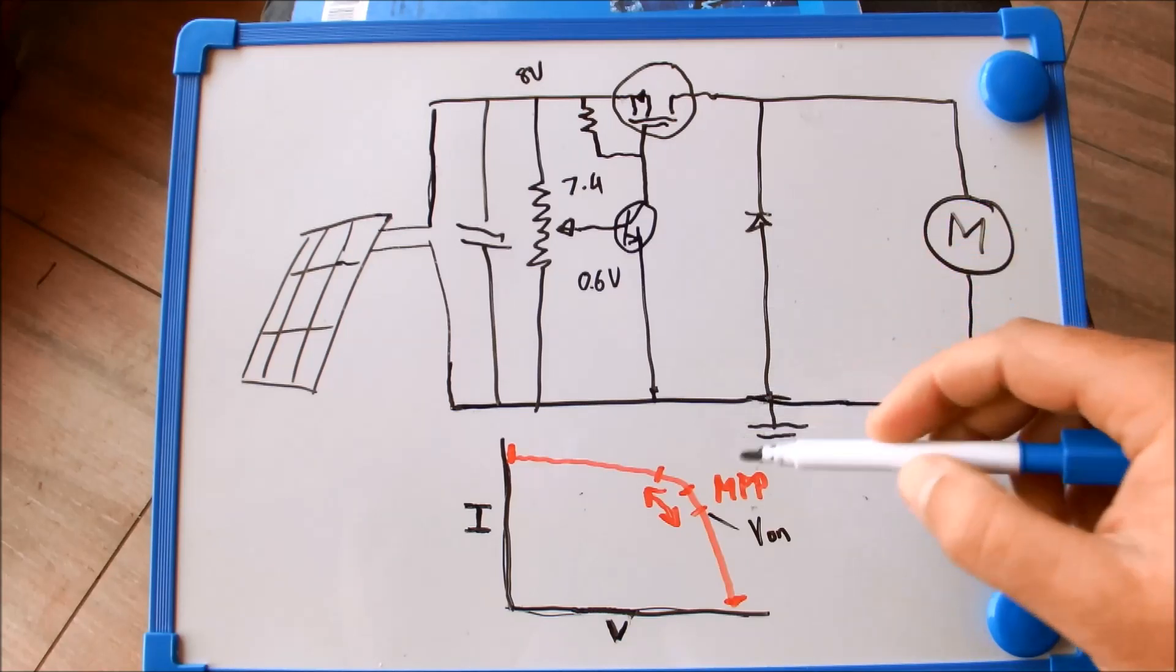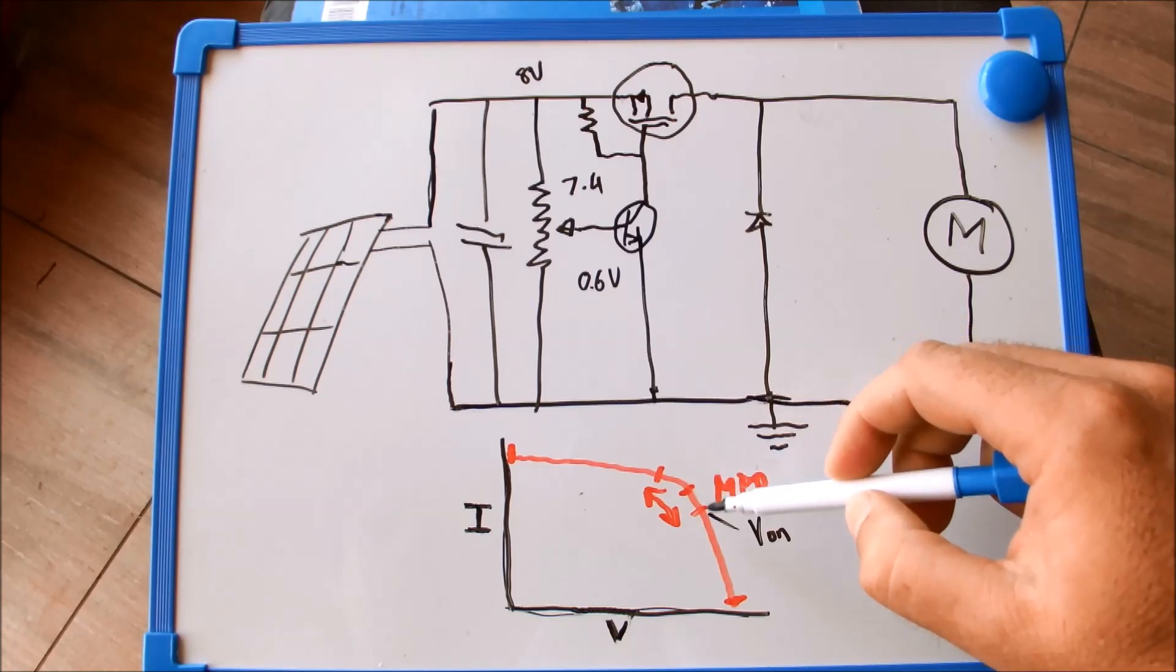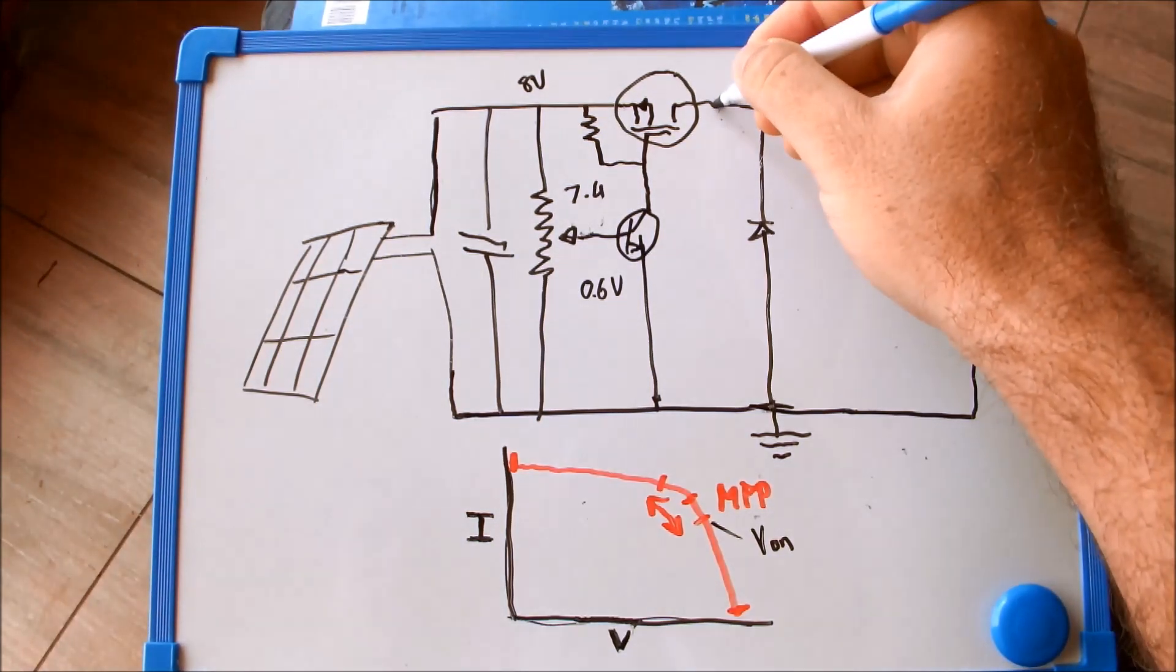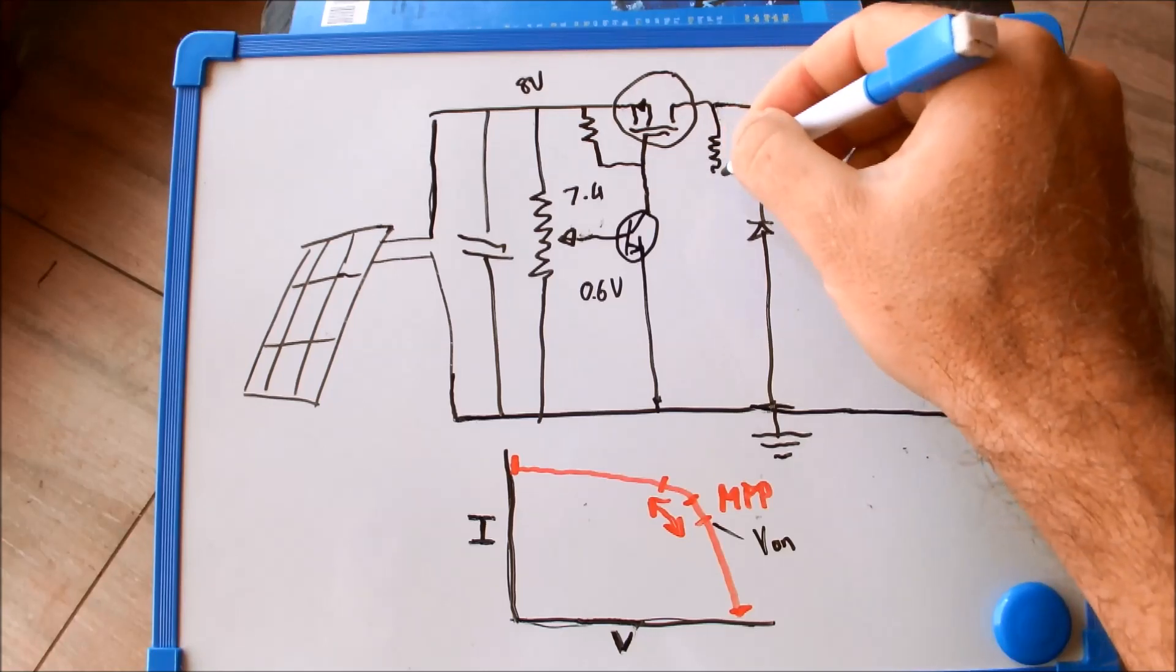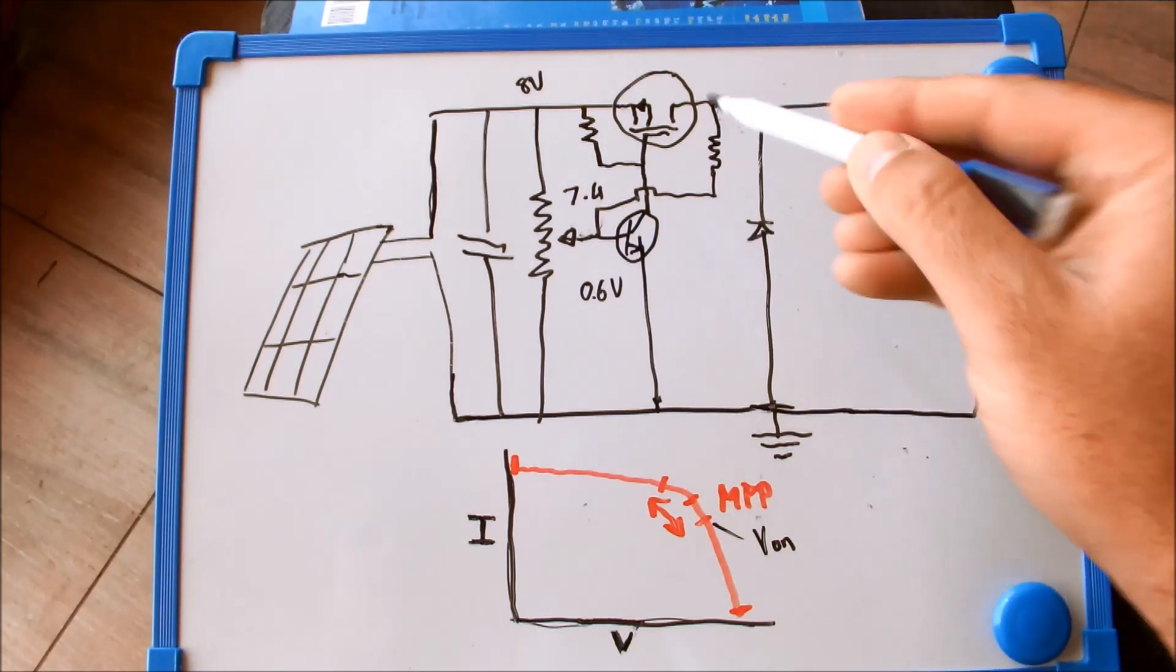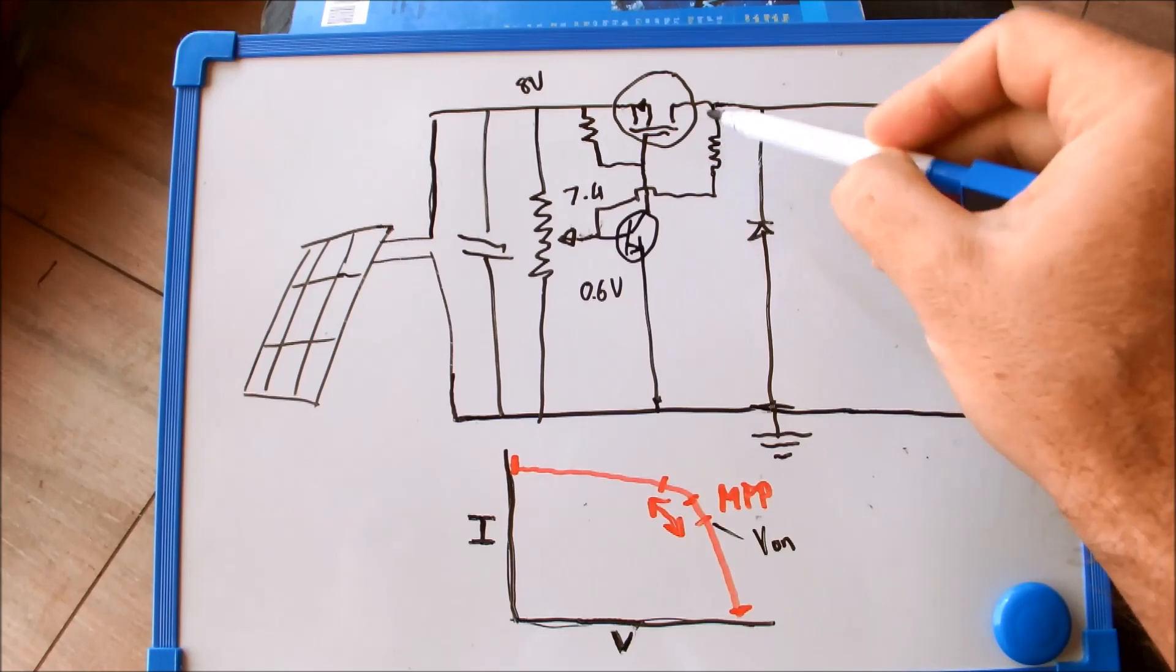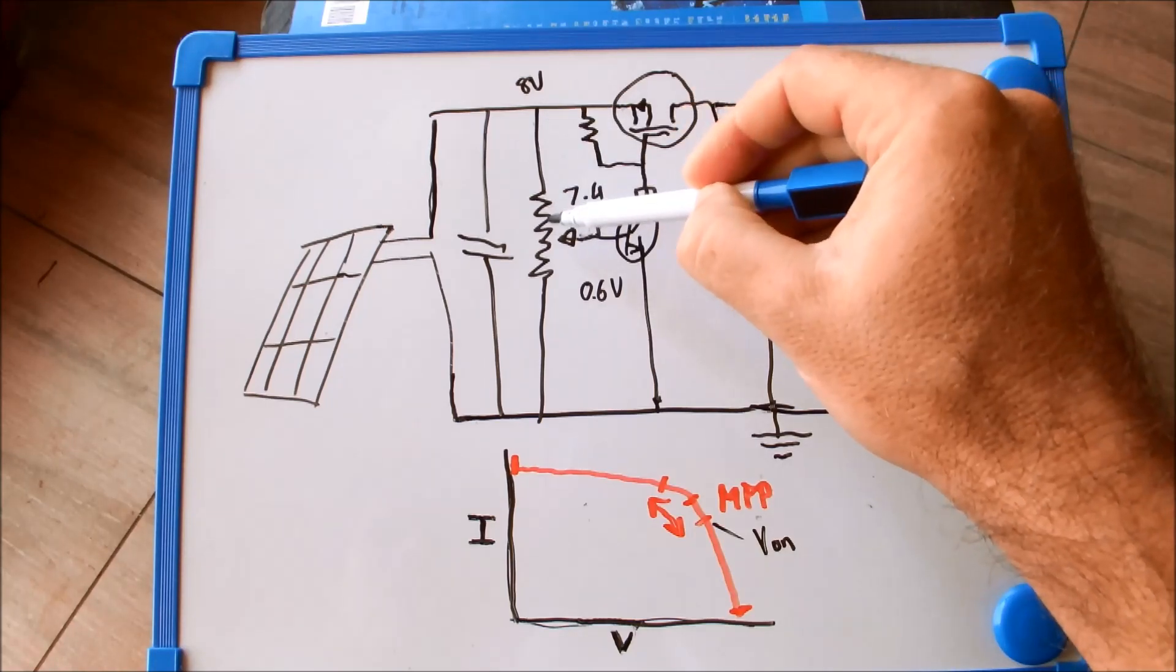I also need a bit of hysteresis built into the circuit so that it doesn't immediately switch off once the voltage drops below 8 volts. I do that by adding another resistor from this side of the circuit and then tying that in to the base of the transistor. So what happens is that when the MOSFET is switched on, this resistor is essentially in parallel with the top resistance on the voltage divider...